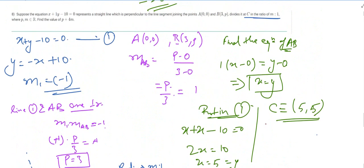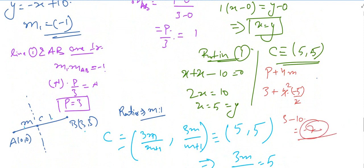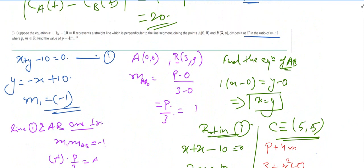We wanted p plus 4m. So that is 3 plus 4 times (minus 5 over 2), which equals 3 minus 10, giving us the answer minus 7.